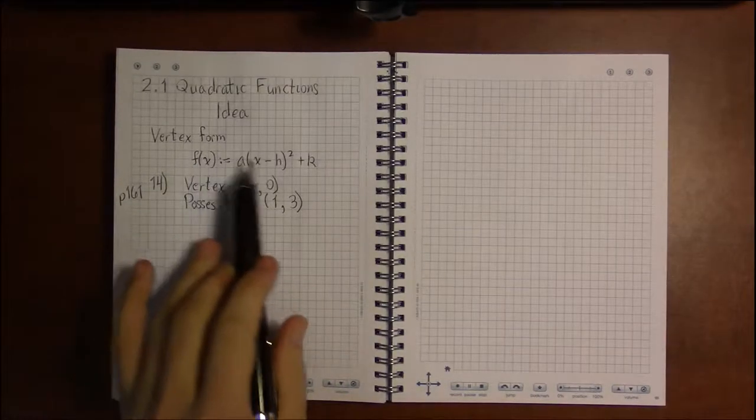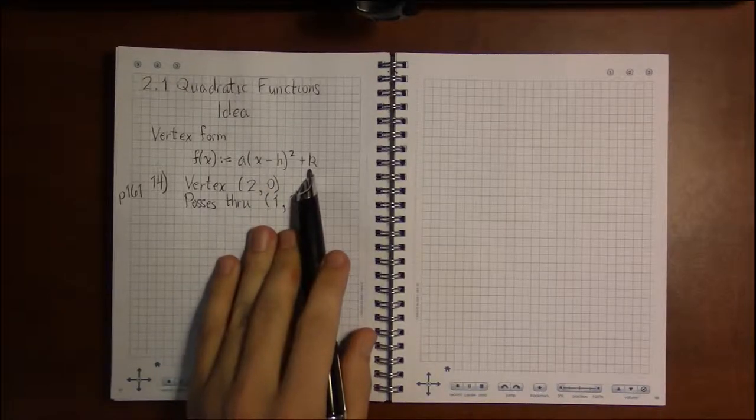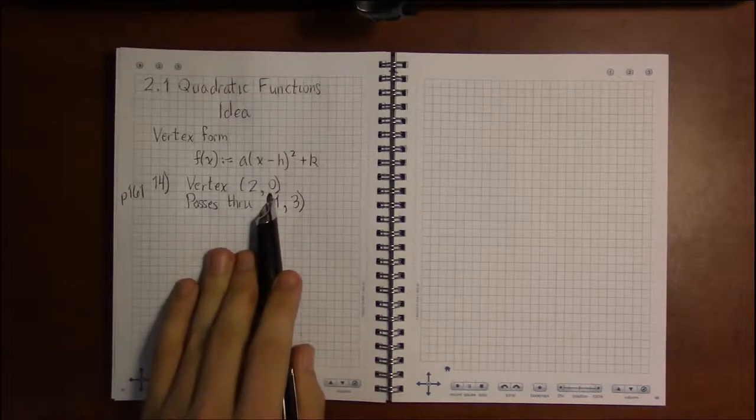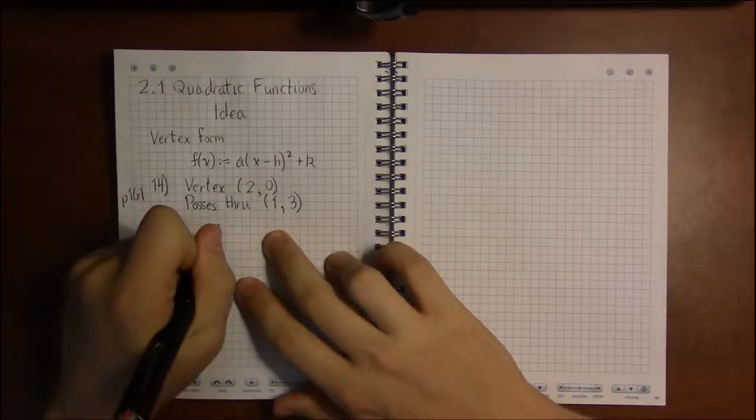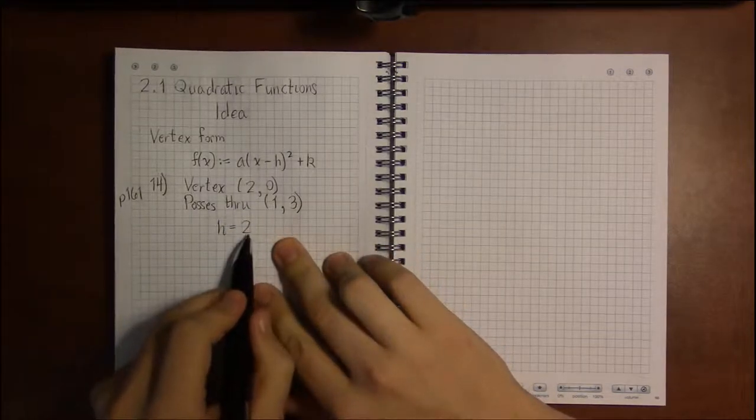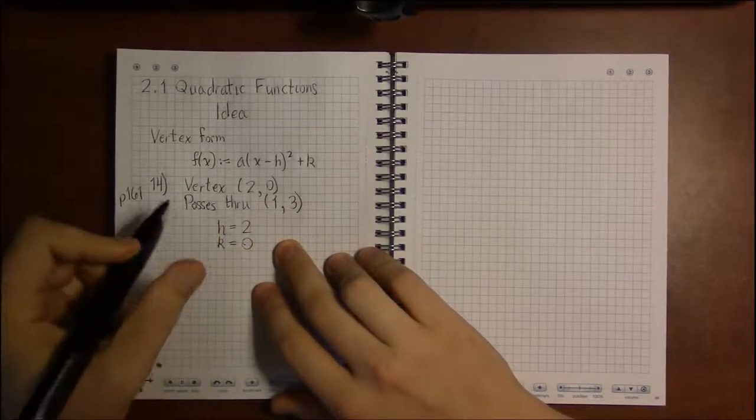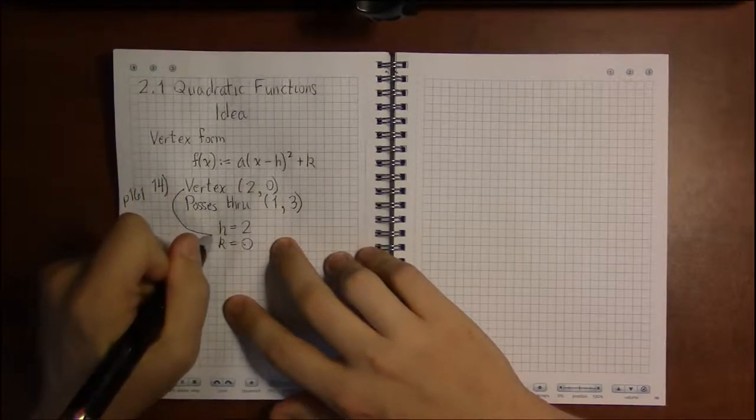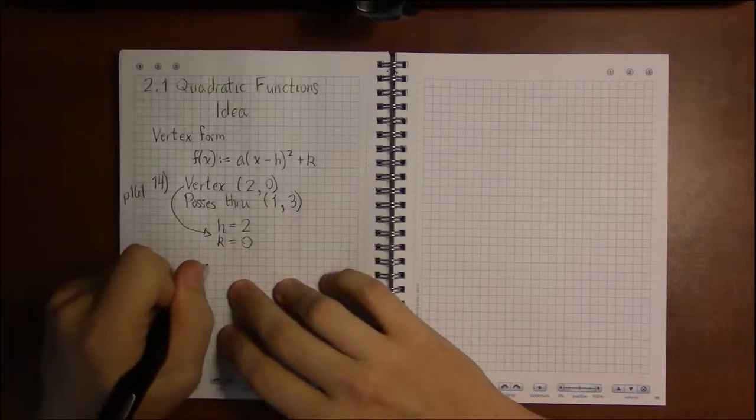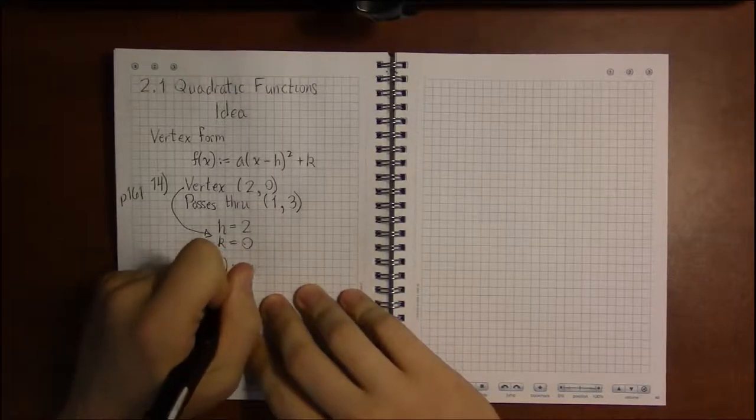Now what's special about the vertex form is that H and K represent the x and y coordinates of the vertex, respectively. So when you're told what the vertex is, they're telling you that H, the x-coordinate, is 2 and K, which is the y-coordinate of the vertex, is 0. That's what that first statement tells us.